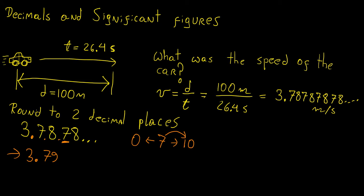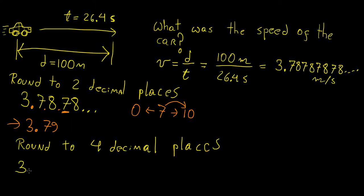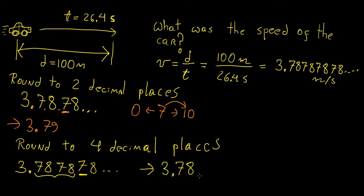The same thing happens if we round to four decimal places. We write down the first four decimals — 3.7878 — and we know this continues. Now we look at the number right next to the fourth decimal place, which is also a 7. Since 7 is closer to 10 than to 0, we round up, adding 1 to that 8, giving us 3.7879. We write the answer as 3.7879 meters per second, because whenever we're making a calculation with units we need to include them, otherwise the numbers are meaningless.